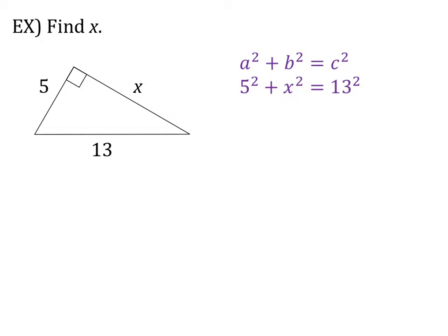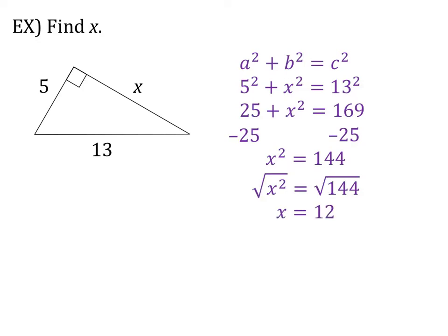So that means it's going to go in for either A or B. In this case, I put it in as my B. So 5 squared plus X squared equals 13 squared. So I know that 5 squared is 25, and 13 squared is 169, so I'm going to plug that in. Then I need to subtract 25 from both sides. So I have X squared is equal to 144. After I take the square root of both sides, then I see that X is equal to 12.